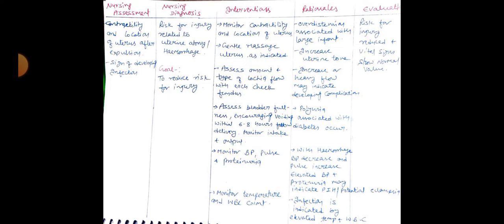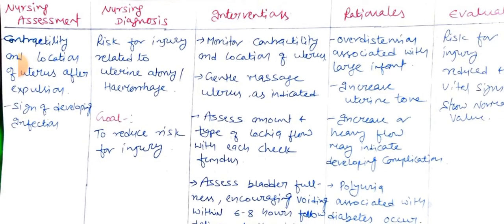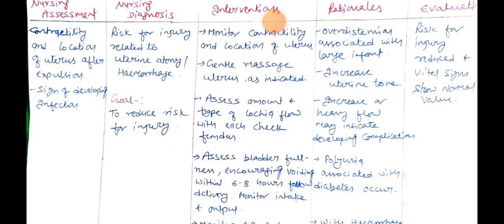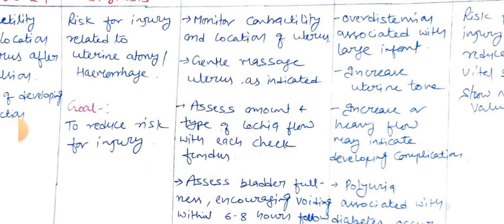Nursing diagnosis number two is: risk for injury related to uterine atony and hemorrhage. Assessment for this diagnosis includes: contractility and location of uterus after expulsion, and signs of developing infection. The goal is to reduce risk for injury.